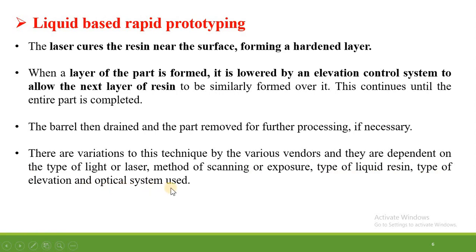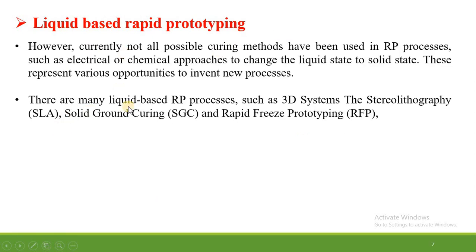There are variations in this technique by various vendors, dependent on the type of laser or light source, method of scanning, exposure, type of liquid resin, and type of elevation optical system used. This liquid-based rapid prototyping varies according to various vendors and may be classified by type of light — UV light or laser — scanning method, type of resin such as epoxy resin, and type of elevation and optical system. In the next video lecture we will discuss liquid-based rapid prototyping systems in detail. The different types include the stereolithography apparatus, solid ground curing, and rapid freezing prototyping.